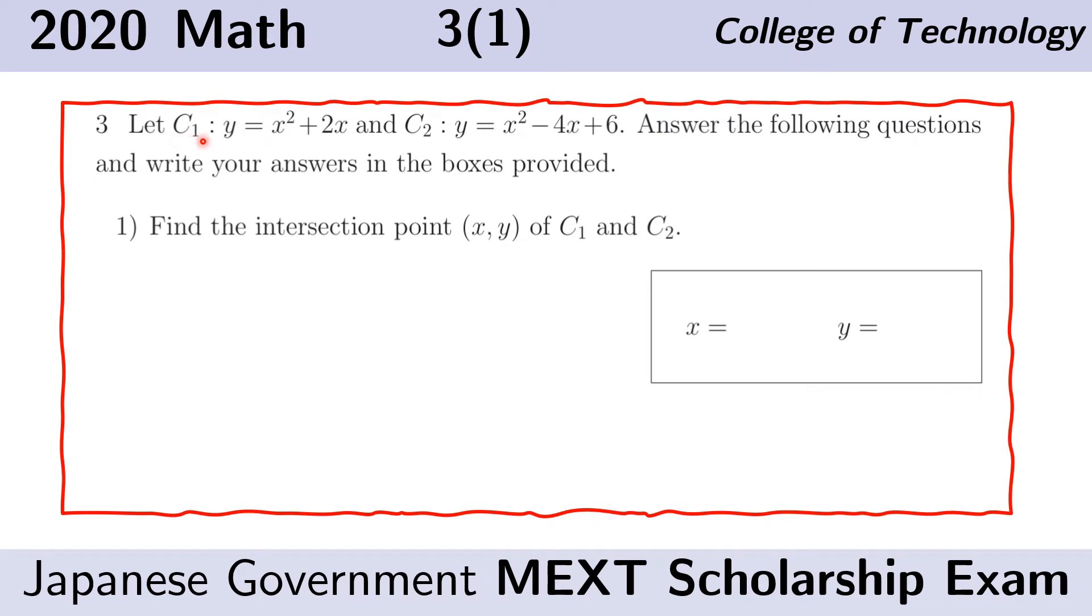Let C sub 1 be the curve Y equals X squared plus 2X. Let C sub 2 be the curve Y equals X squared minus 4X plus 6. Find the intersection point XY of C sub 1 and C sub 2.